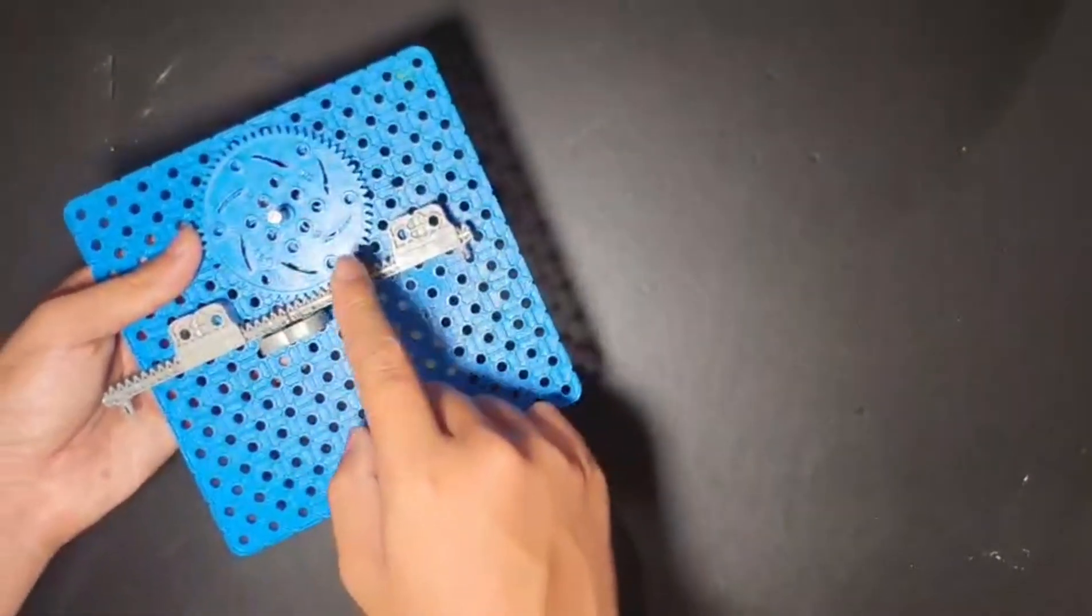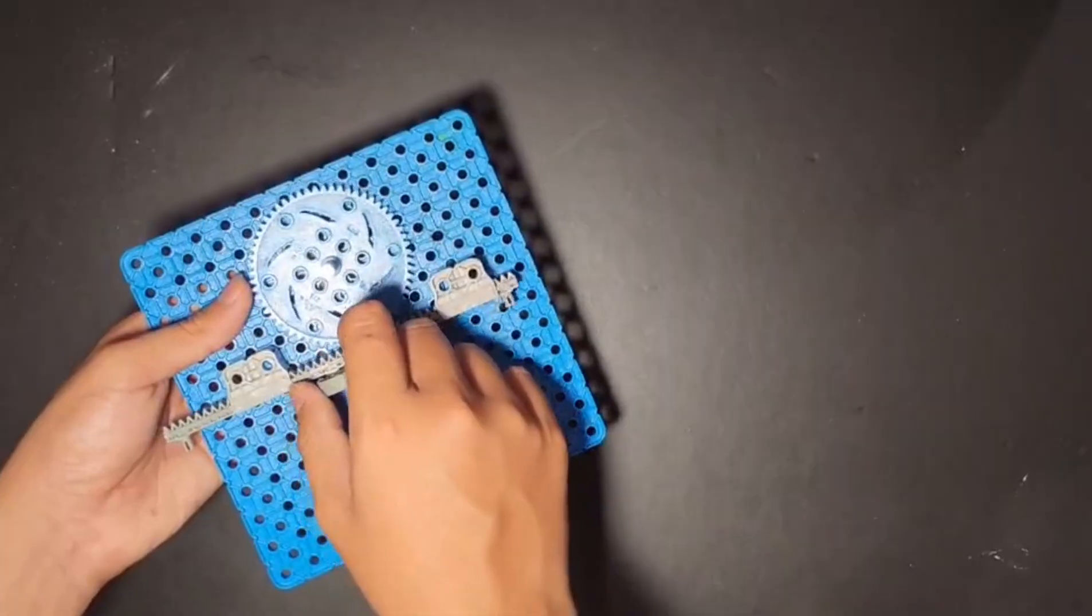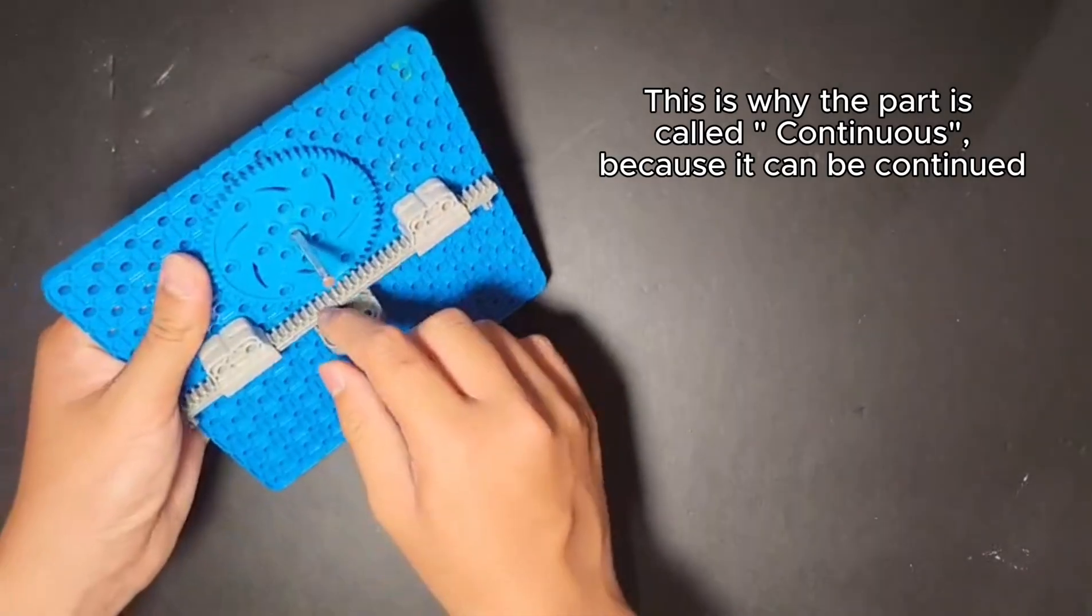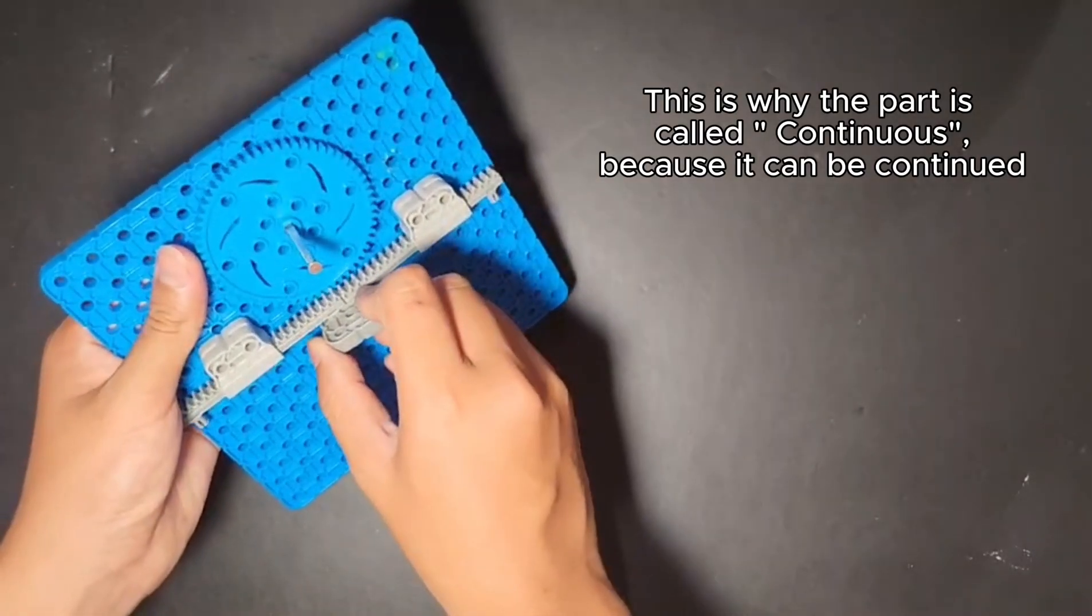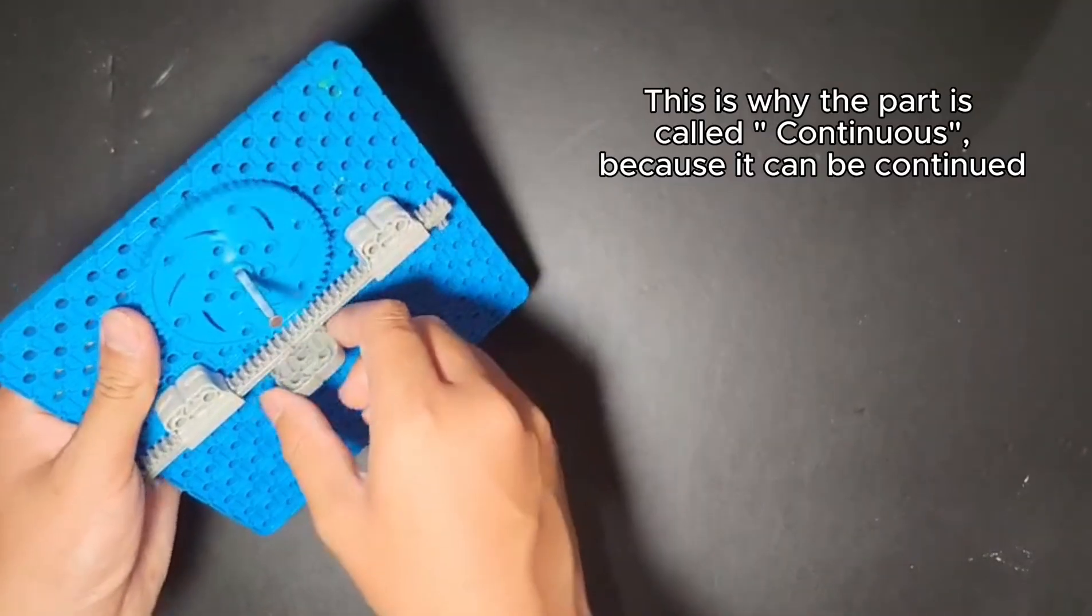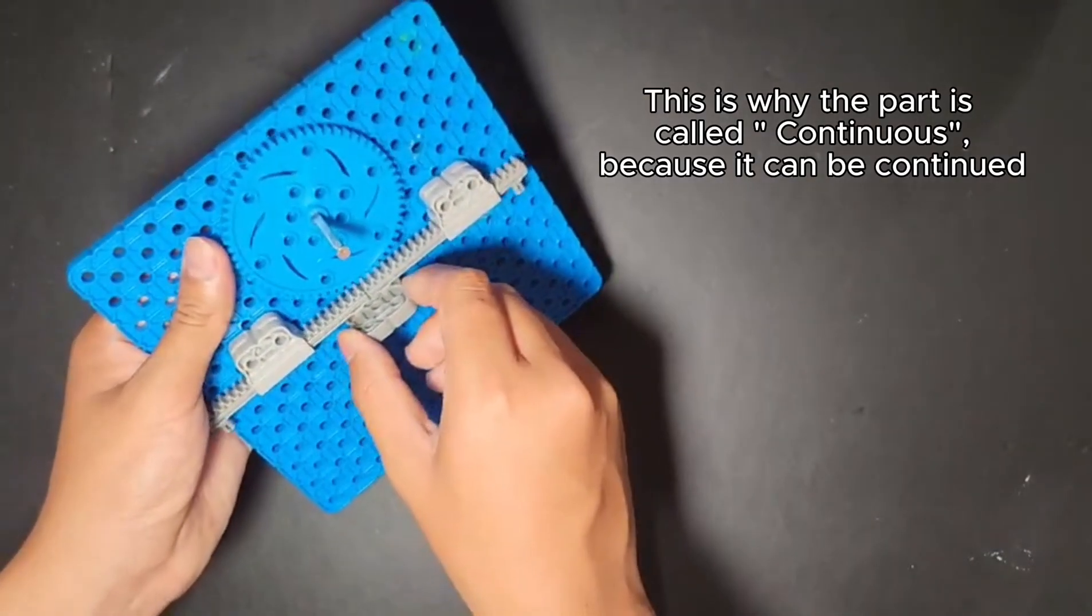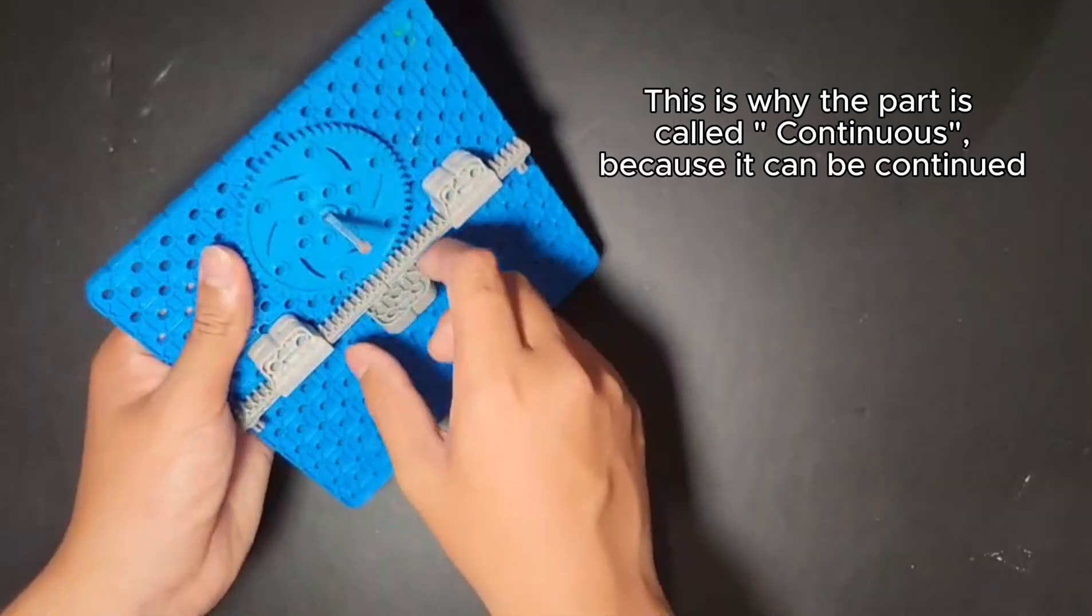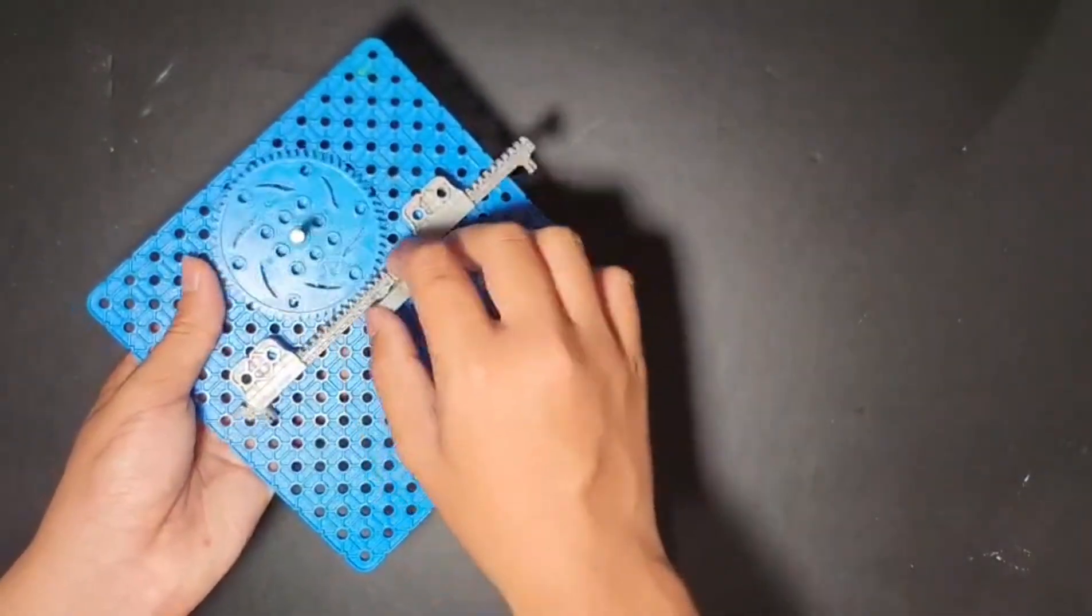And let's say this rack isn't long enough. You can see here I actually connected the two by doing this. This isn't extremely stable. There are better ways to do this, but this is one way of doing it. You can just put a piece here, connect these two, and you have a longer rack.